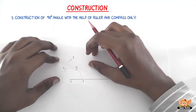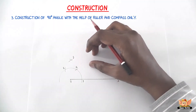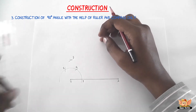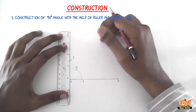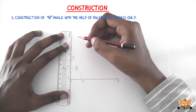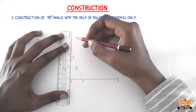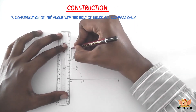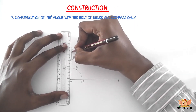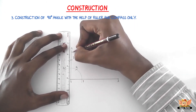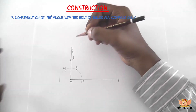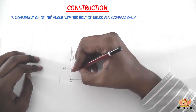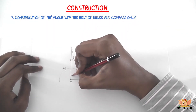Now join OB and produce it to C. So now the angle AOC obtained is a measure of 90 degrees.